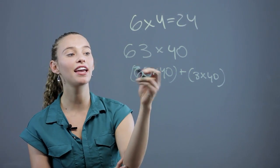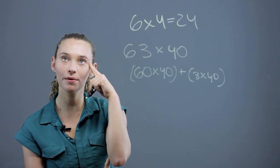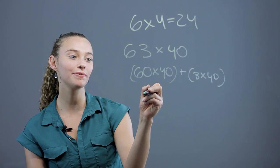We can almost do that in our head, right? We can say, well, 6 times 4, we know it's 24. And we add the zero.